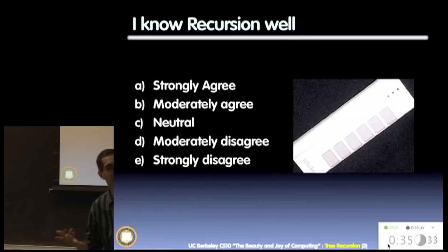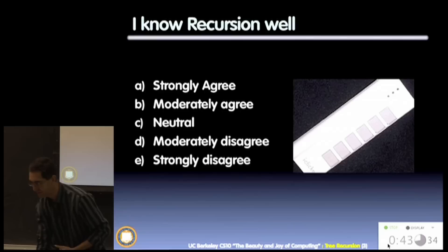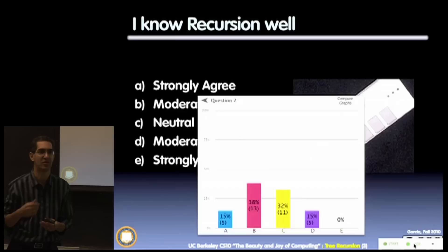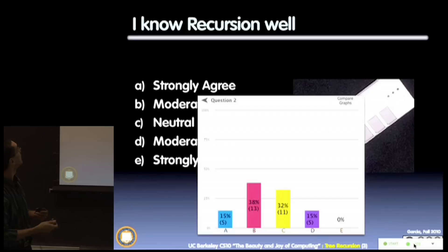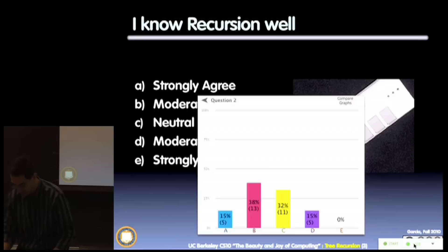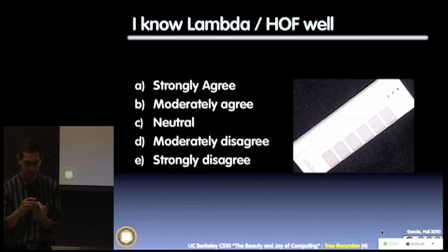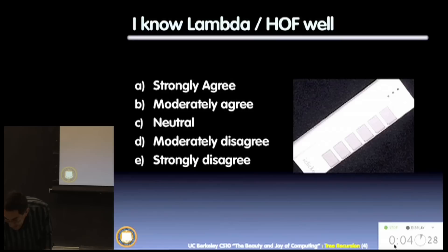Switching to the fancy mic — okay, we're good. Let's vote on how well you know recursion and display the results. We're doing okay — I wouldn't mind having more people slosh to the left. This is also very important for influencing our TAs who are going to be giving review sessions. Next question: I know lambda and higher-order functions well.